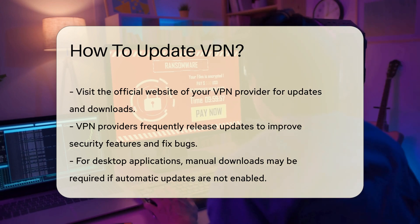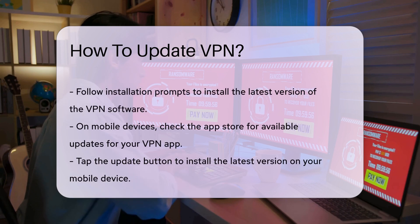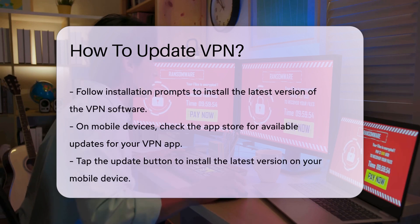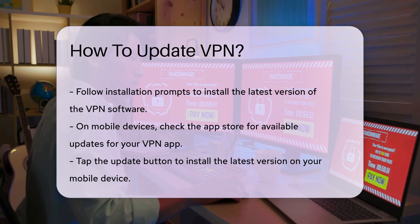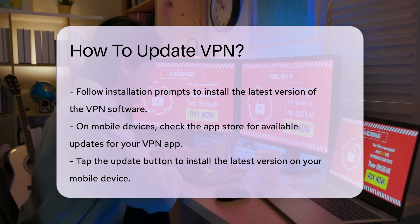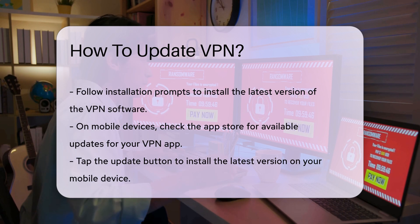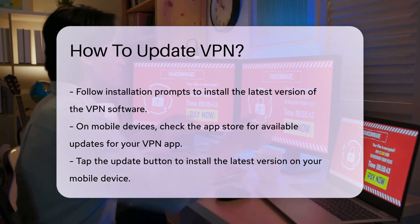Ensure you uninstall the old version if required. On mobile devices, open the App Store relevant to your operating system. Search for your VPN app and check if an update is available. If so, tap the Update button to install the latest version.